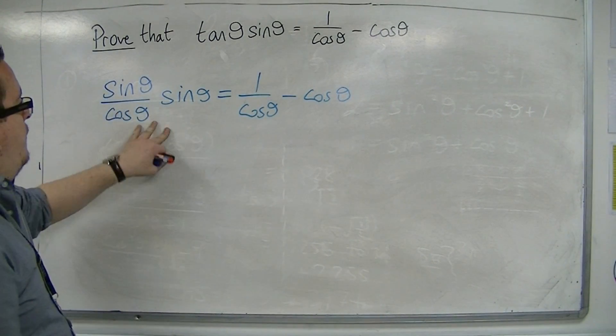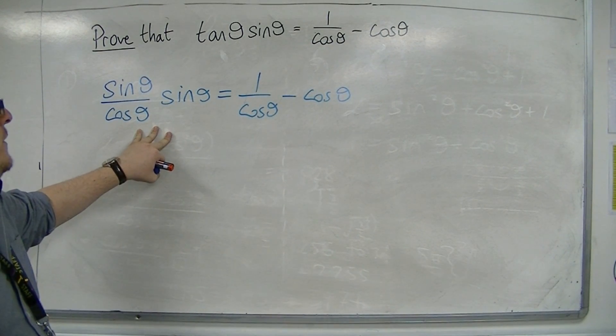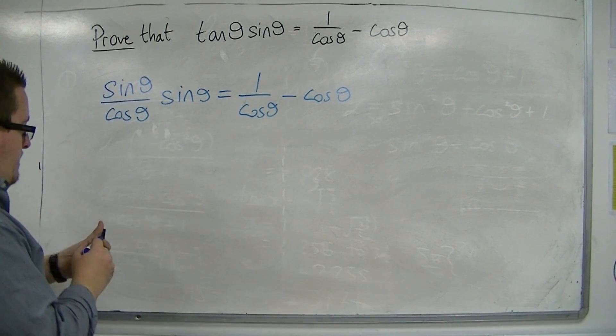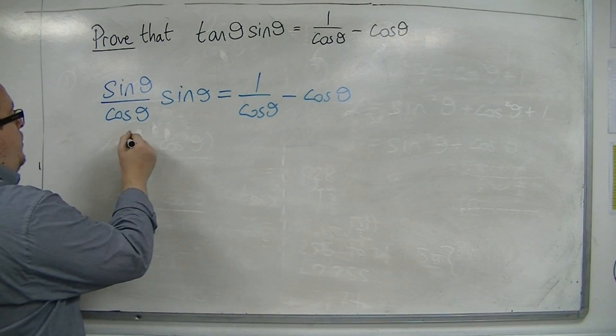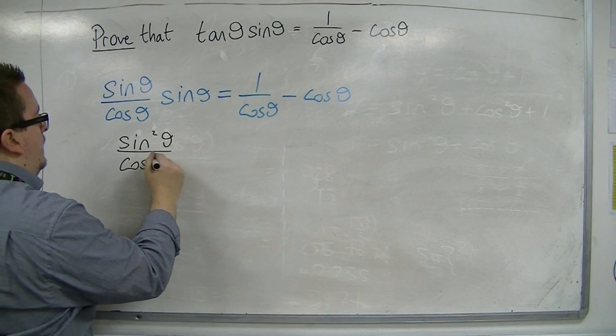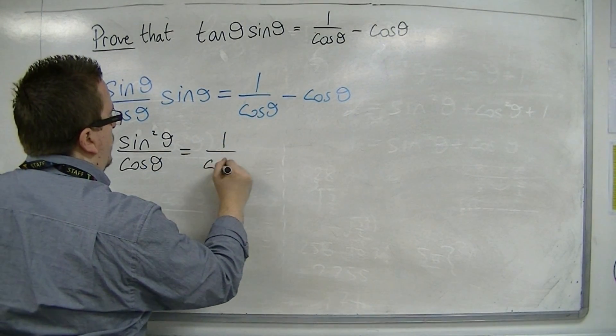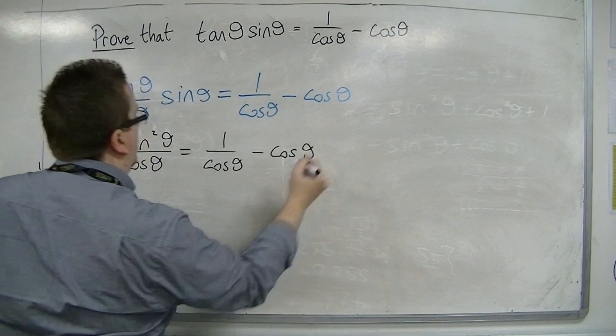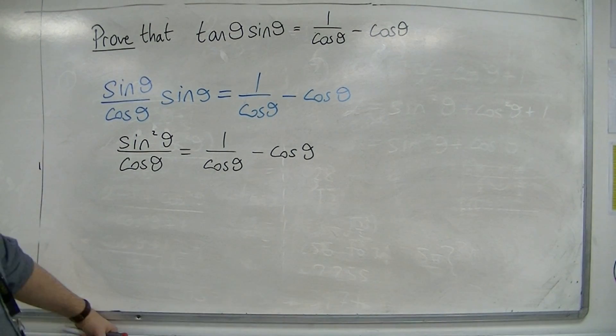If I look at the left-hand side, then that is the same as sin squared theta over cos theta, which is 1 over cos theta minus cos theta. So that's the left-hand side as it stands.